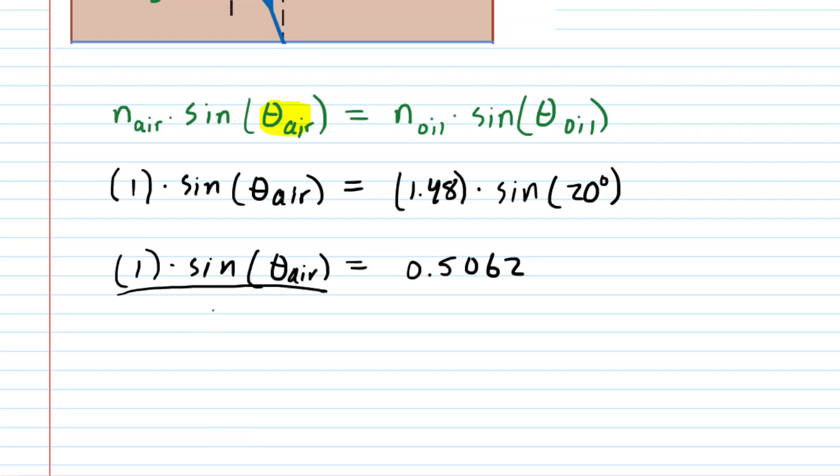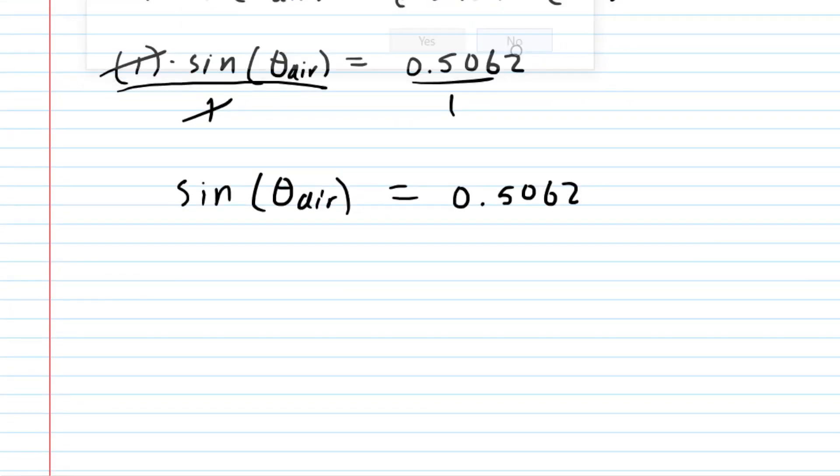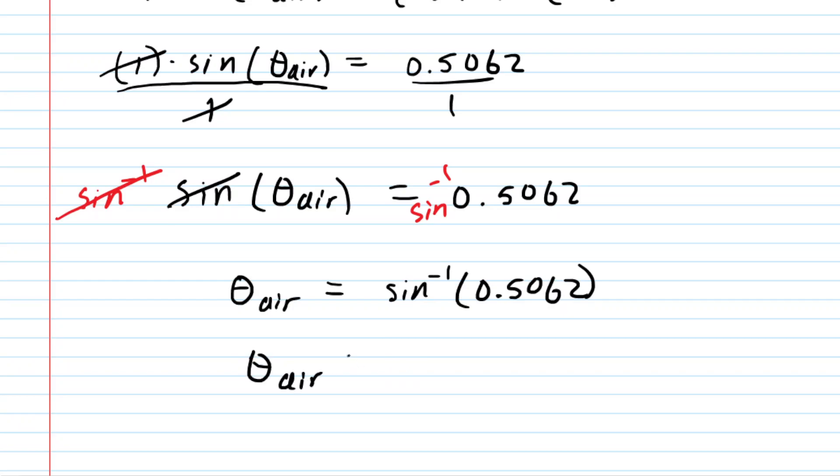We can then divide both sides of the equation by 1 to cancel it on the left side. And then to solve for theta, what we do is we actually take the inverse sine on both sides. A lot of students tell me they'll divide by sine. That would be incorrect. You take the inverse sine so that the inverse sine cancels the sine. When you punch that into your calculator, you should find that the angle of incidence in the air is about 30.4 degrees.